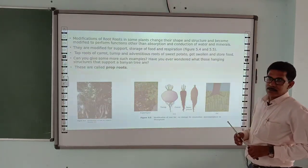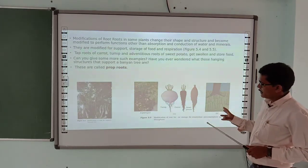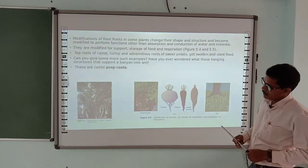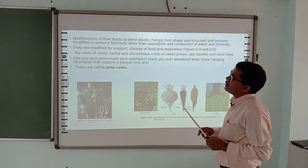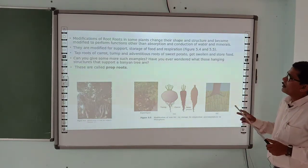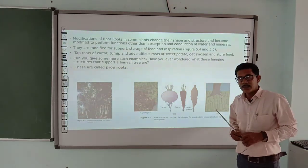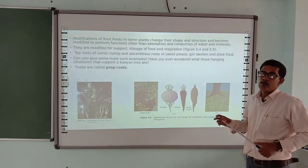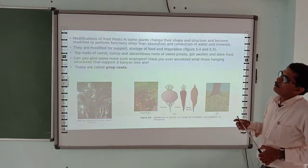Now we will cover modifications of roots. Roots undergo different types of modifications, such as in turnip, carrot, and sweet potato, where they are modified for food storage. In some plants, roots change their shape and structure to perform functions other than absorption — such as food storage.